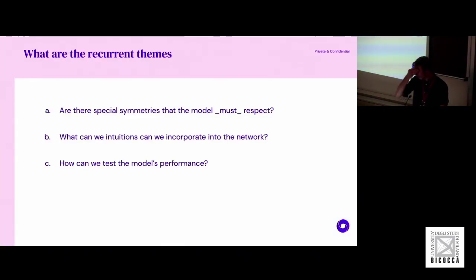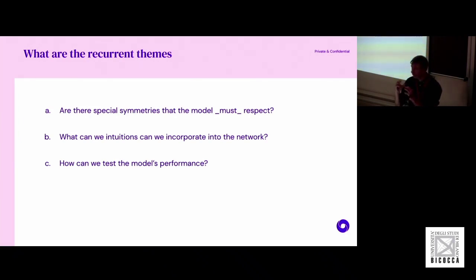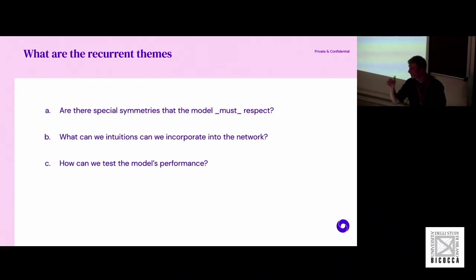I wanted to underline the recurrent machine learning themes I'll be talking about. There are three important factors. One is identifying really important stuff that has to be respected and baked into the model. The second is how do you translate an intuition about the problem into something you can put in a neural network — not a fixed rule, but something you think is part of the problem. Finally, it's really important to benchmark and test your model correctly with whatever is correct in the field you're working in.